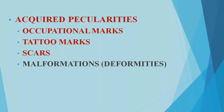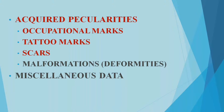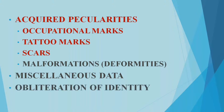Acquired peculiarities are features a person develops during life due to occupation or personal practices — occupational marks, tattoo marks, or scars. Sometimes malformations or deformities will also be seen. There are also miscellaneous data including handwriting, speech, gait, and cases of obliteration of identity where one has to confirm identity from remaining features.